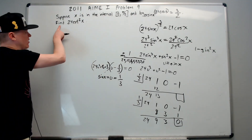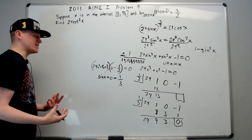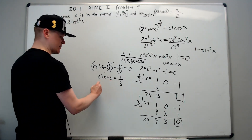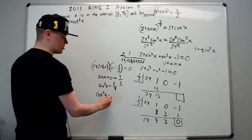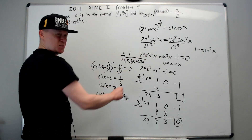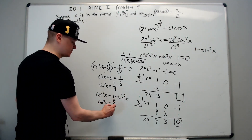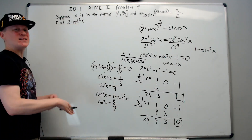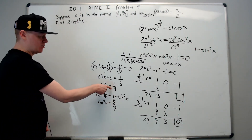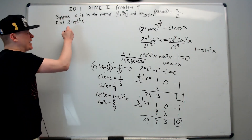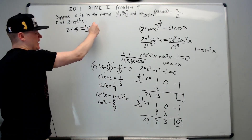Now for the two endings. The standard approach: square 1 over 3 to get sine squared of x equals 1 over 9. Then cosine squared of x equals 1 minus sine squared of x equals 1 minus 1 over 9 equals 8 over 9. Cotangent squared is cosine squared over sine squared, so 8 over 9 divided by 1 over 9 — the ninths cancel — giving 8. Then 24 times 8: 8 times 20 is 160, plus 32 is 192, which is the answer.